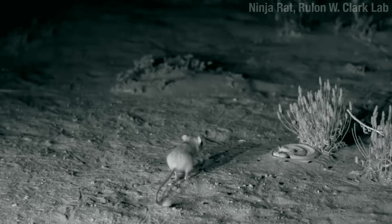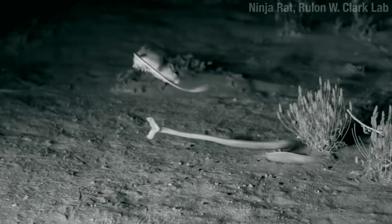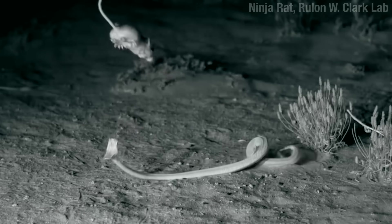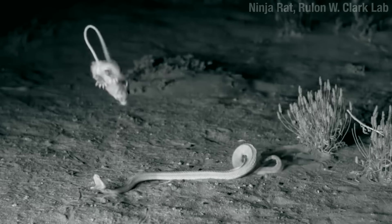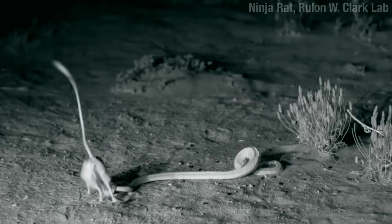Because once a rattlesnake starts its strike, it's fully committed to that line. There's no changing direction midway, and you can see they miss quite often. Boom, right in the noggin.